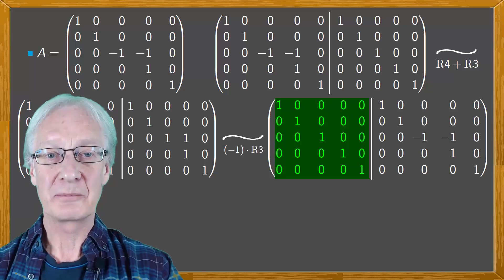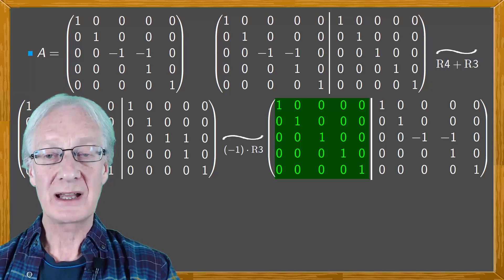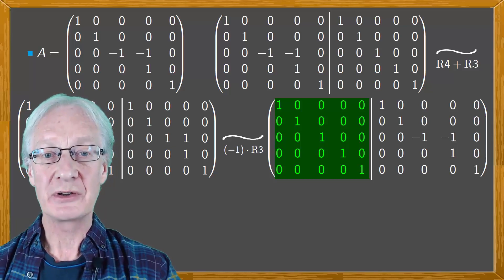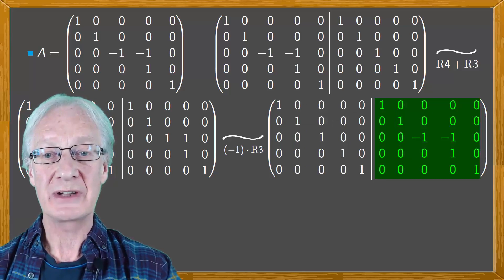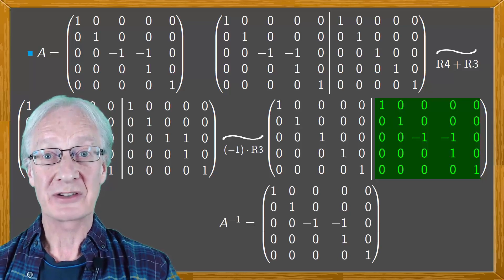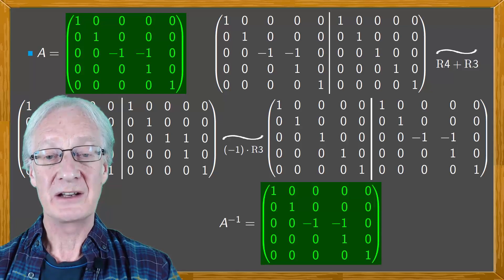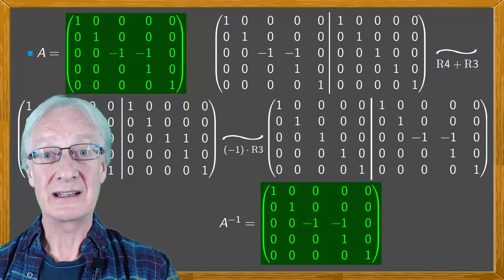As in the first block we now have the identity matrix, matrix A is invertible and its inverse is the matrix that appears in the second block. We have that A⁻¹ is this matrix — and notice that it's the matrix A itself.